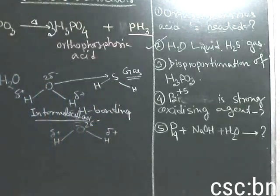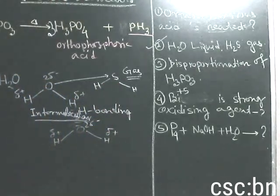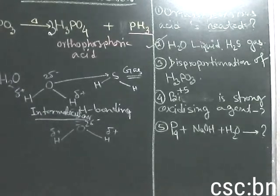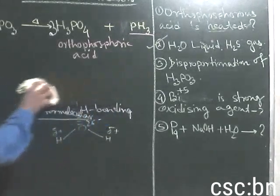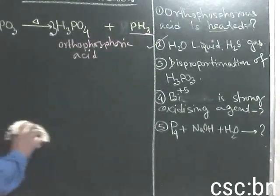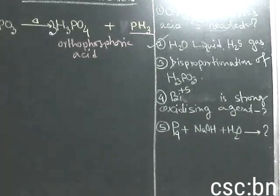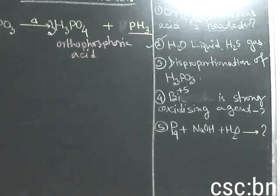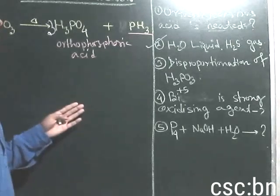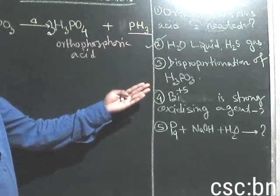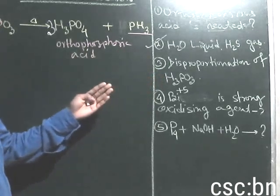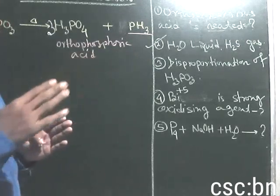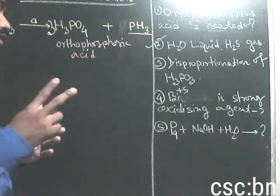Now our next question is question number 3. Question number 3 is the disproportionation of H3PO3. Disproportionation means the oxidation state changes — this is intramolecular hydrogen bonding.